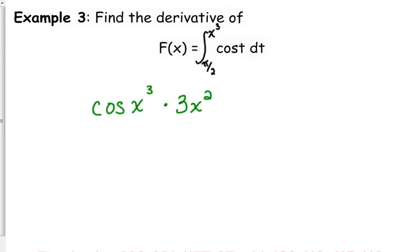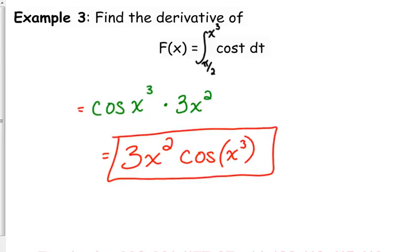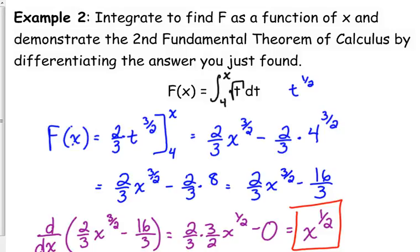Now, be careful with this. The 3x squared does not combine with the x cubed. The 3x squared goes in front. It's 3x squared times the cosine of x cubed. That's it. The lower limit doesn't matter because, as we just demonstrated in that last example, even when we plug it in, because it's a number, we plug it in, you get a number as an answer, and when you take the derivative of a number, the answer is 0. So yes, if your limit is a number, it has no effect on the derivative of an integral.